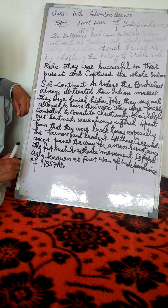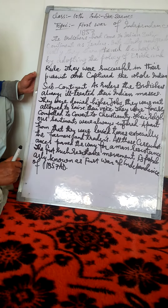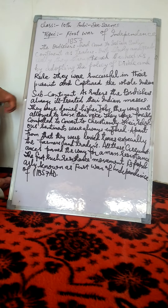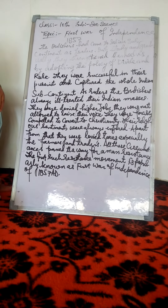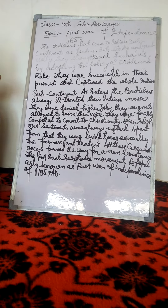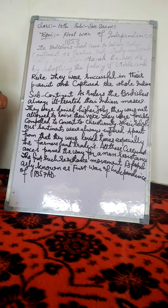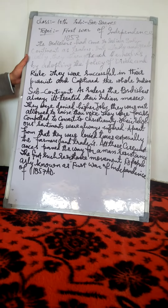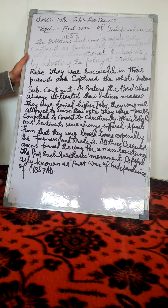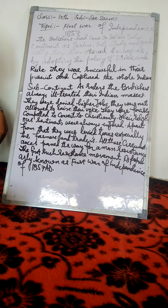Today my topic is the First War of Independence, which pertains to the social science subject. The Britishers had come to India as traders under the banner of the British East India Company. But slowly and gradually they strengthened their power by adopting a policy of divide and rule, and were able to capture the whole subcontinent.